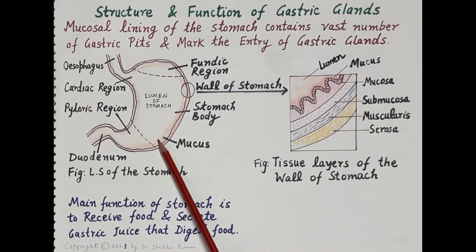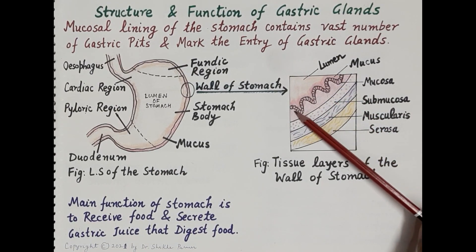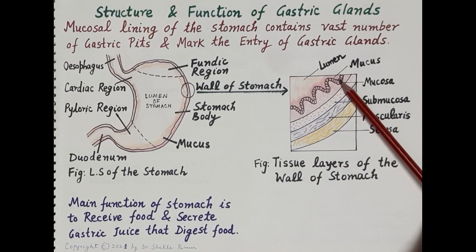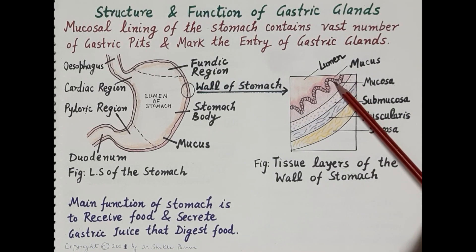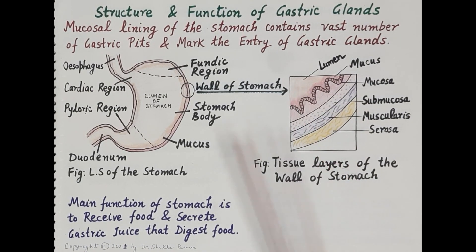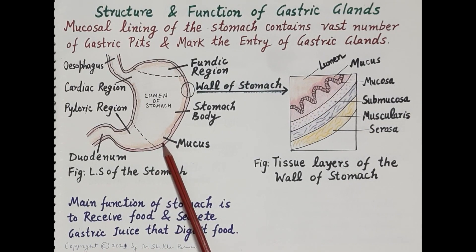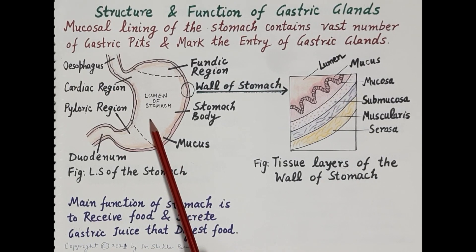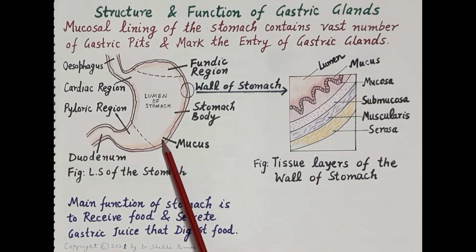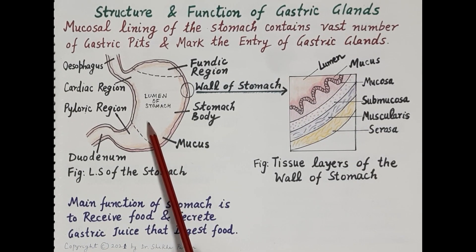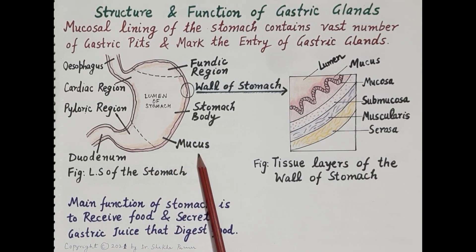The mucosa — the innermost lining of the stomach wall — consists of gastric pits, and each gastric pit is made up of gastric glands. These gastric glands secrete digestive fluid that is released into the lumen of the stomach to digest food. The mucus layer prevents direct contact between the food contents and the stomach wall, making it a highly protective barrier.